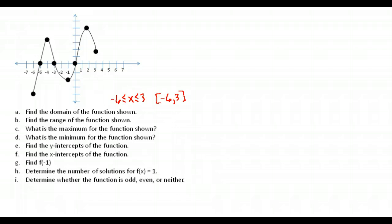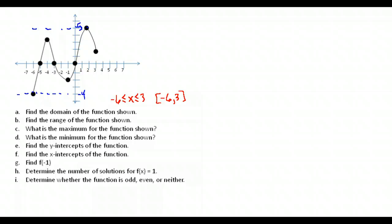The next question asks for our range. The range is your possible y-values — from the lowest y-value to the highest. Looking at this graph, the lowest y-value appears to be negative four and the largest y-value is five. So the range is from negative four to positive five. I'll write the answer in interval notation: [-4, 5].